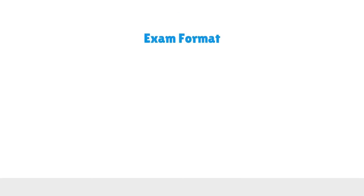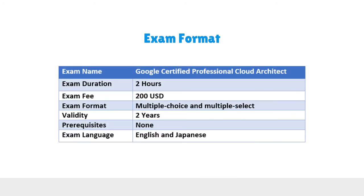Exam format. Another important thing that the candidate needs to know is the basic exam details, such as exam duration, fee, and number of questions. The Google Certified Professional Cloud Architect exam is in the form of multiple choice questions. The candidate will be given two hours to complete the exam. The registration fee is $200 plus tax where applicable. The exam is available in the English and Japanese language.